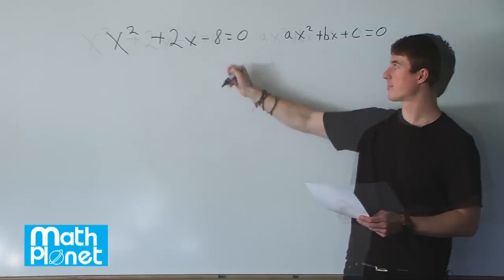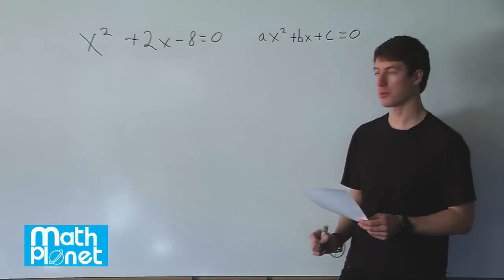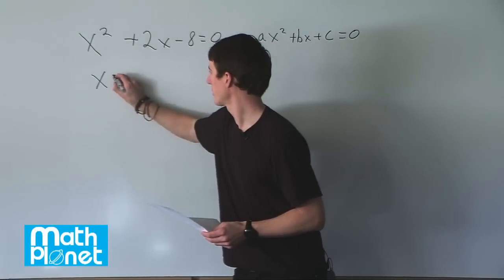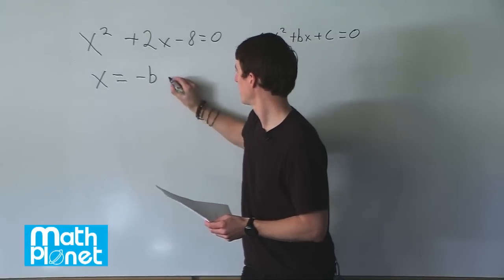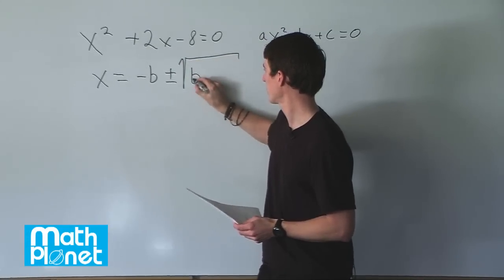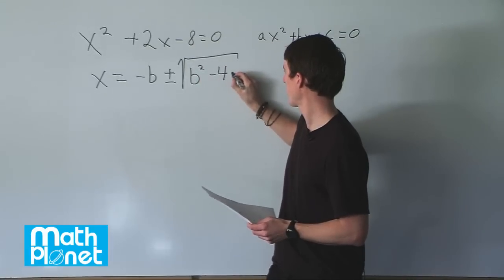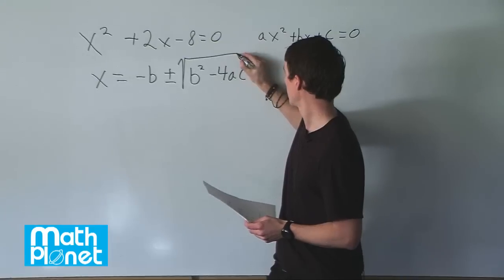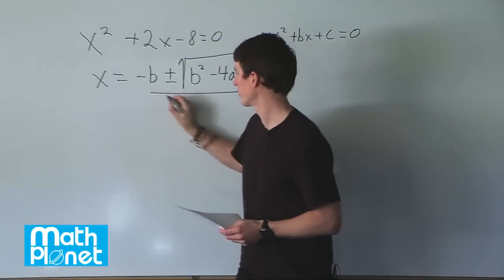So the quadratic formula reads x is equal to minus b plus or minus the square root of b squared minus 4a times c, and then that's all over 2a.